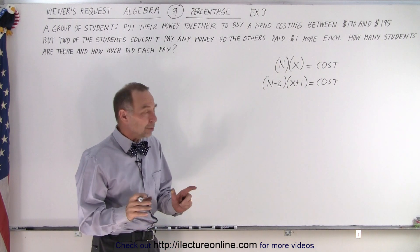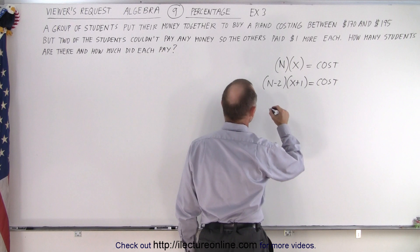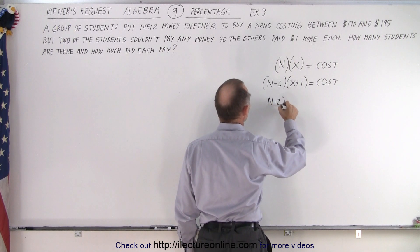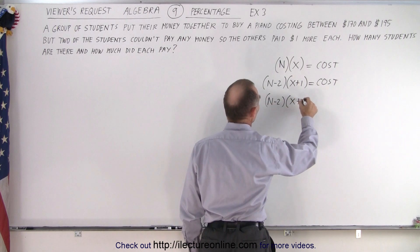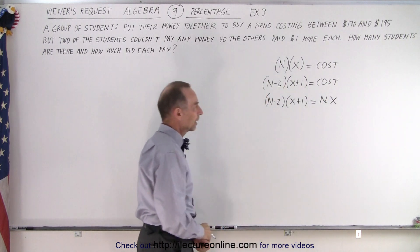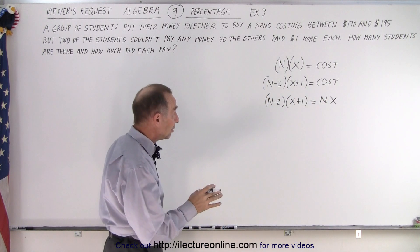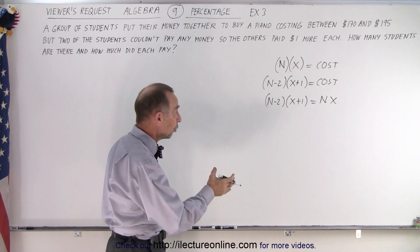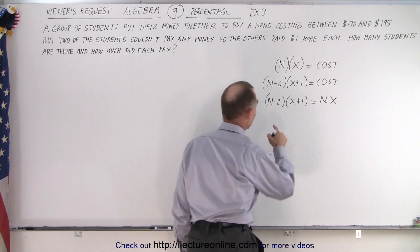So if both of those equal the cost, what we can then say is that (n-2) multiplied times (x+1) must therefore equal n times x. That gives us a way to compute the number of students relative to the amount of dollars that we're given. So let's try that.